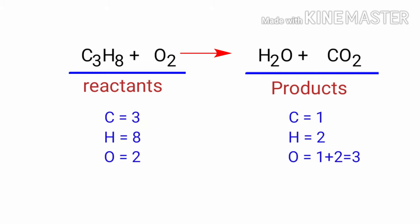If you look at this equation, the equation is not balanced. In the reactants side, there are 3 carbon atoms, 8 hydrogen atoms, and 2 oxygen atoms. In the products side, there are 1 carbon atom, 2 hydrogen atoms, and 3 oxygen atoms.